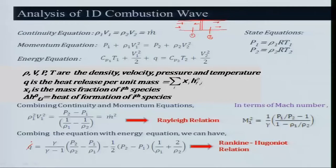Combining with the energy equation gives: q = [γ/(γ-1)] · (p₂/ρ₂ - p₁/ρ₁) - (1/2)(p₂ - p₁)(1/ρ₁ + 1/ρ₂). This is the Rankine-Hugoniot relationship. When q = 0, this reduces to the normal shock wave relationship derived earlier.